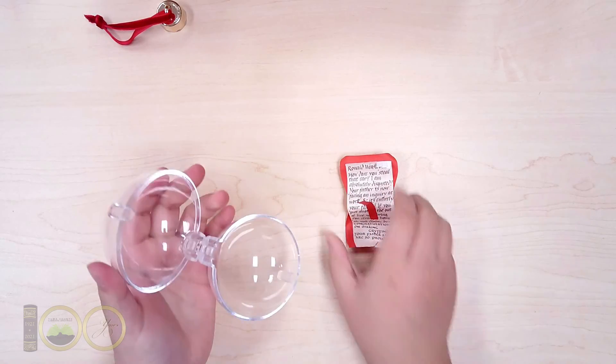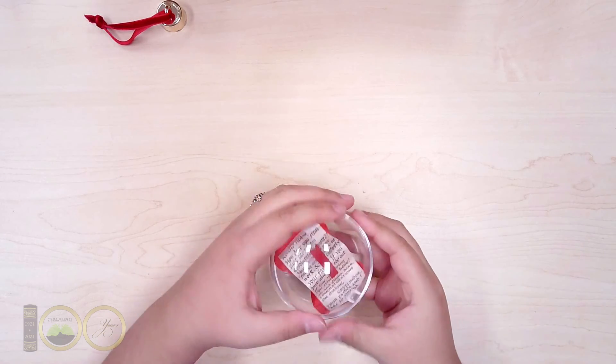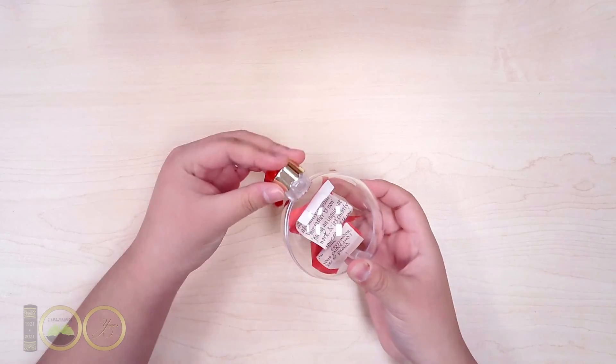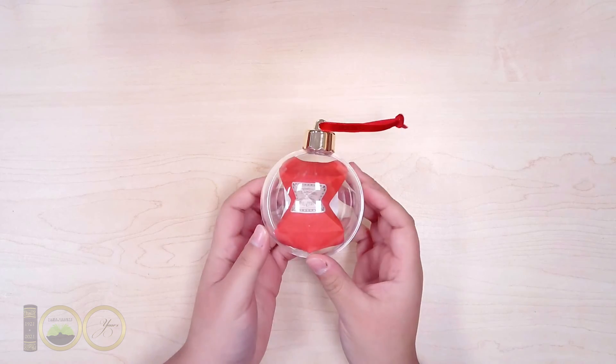Lastly, place the howler into the clear decoration ball to create the floating illusion. And there you have it! The floating howler decoration is complete!